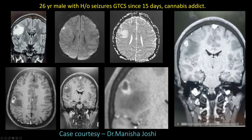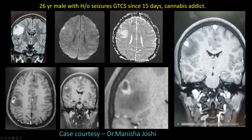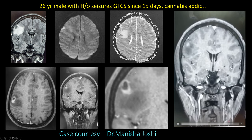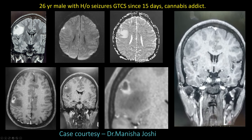On IV contrast, you can see the conglomerate ring enhancing lesions. There is a typical perilesional contrast leakage seen around the lesion. This perilesional contrast leakage is the teaching point here — it is specific for NCC (neurocysticercosis) rather than tuberculomas.